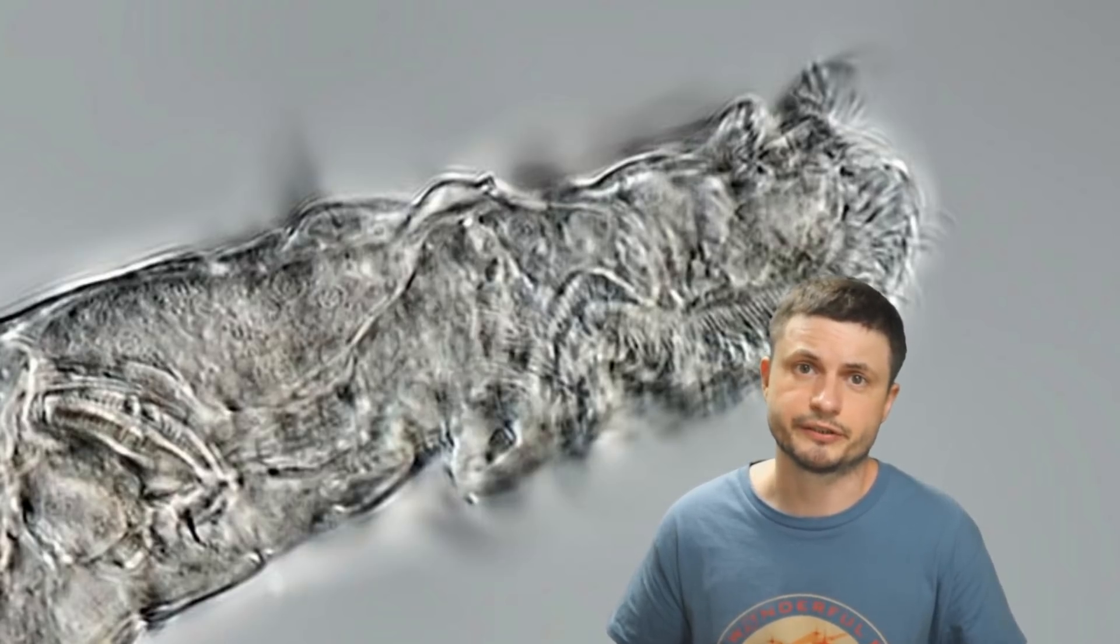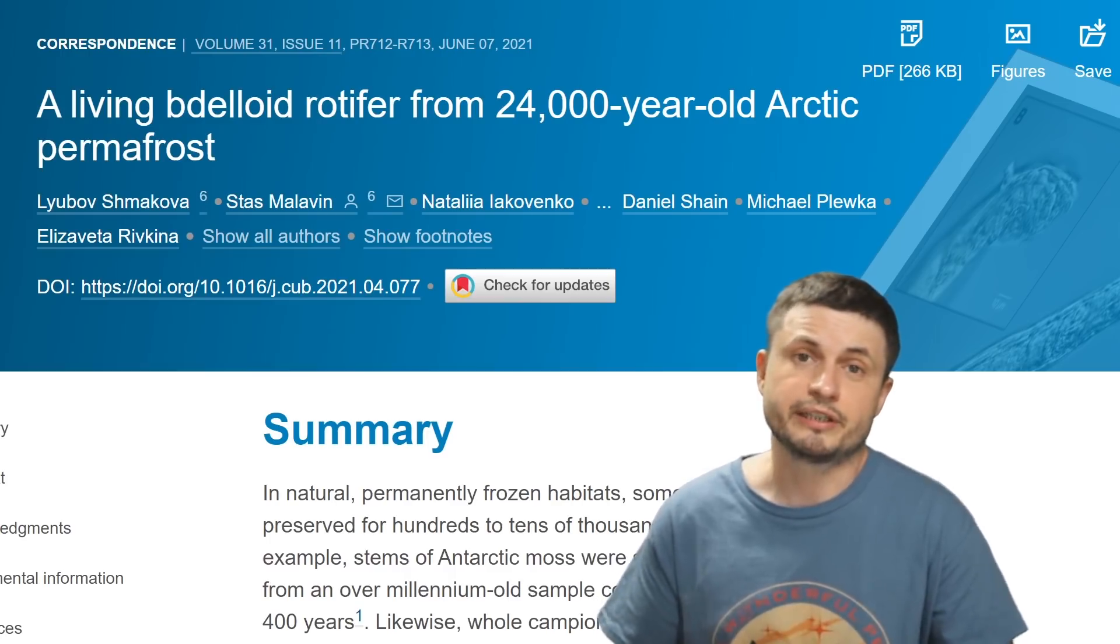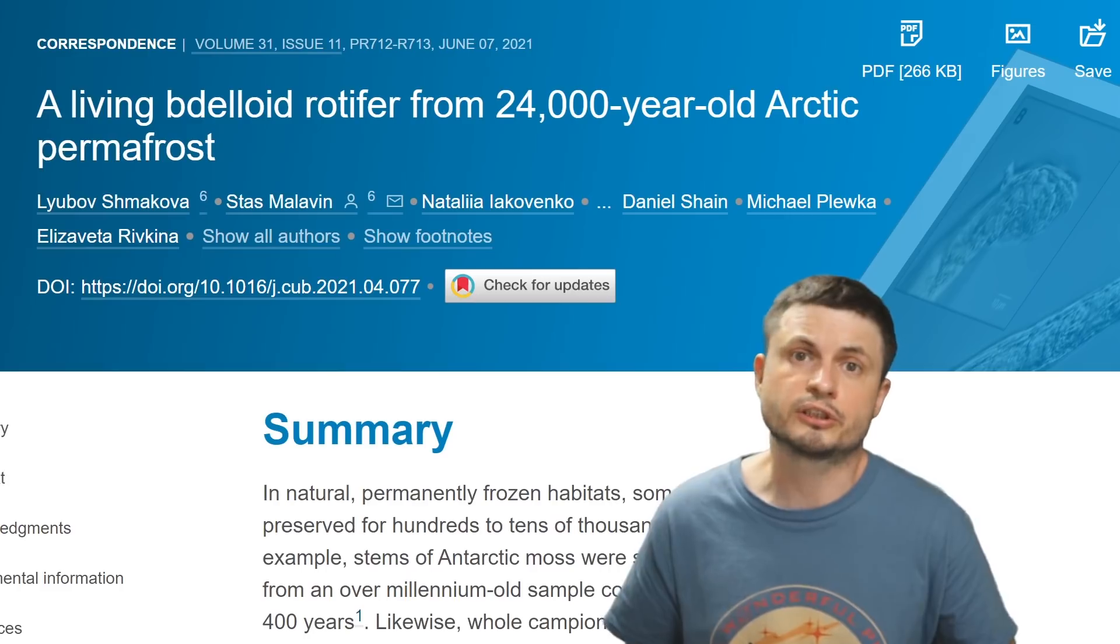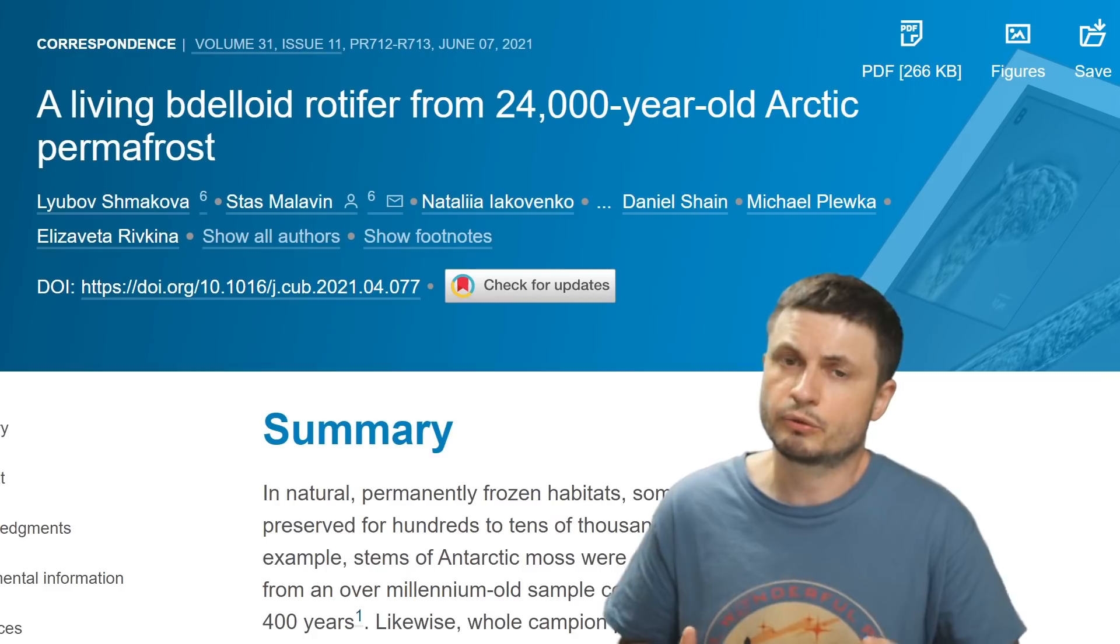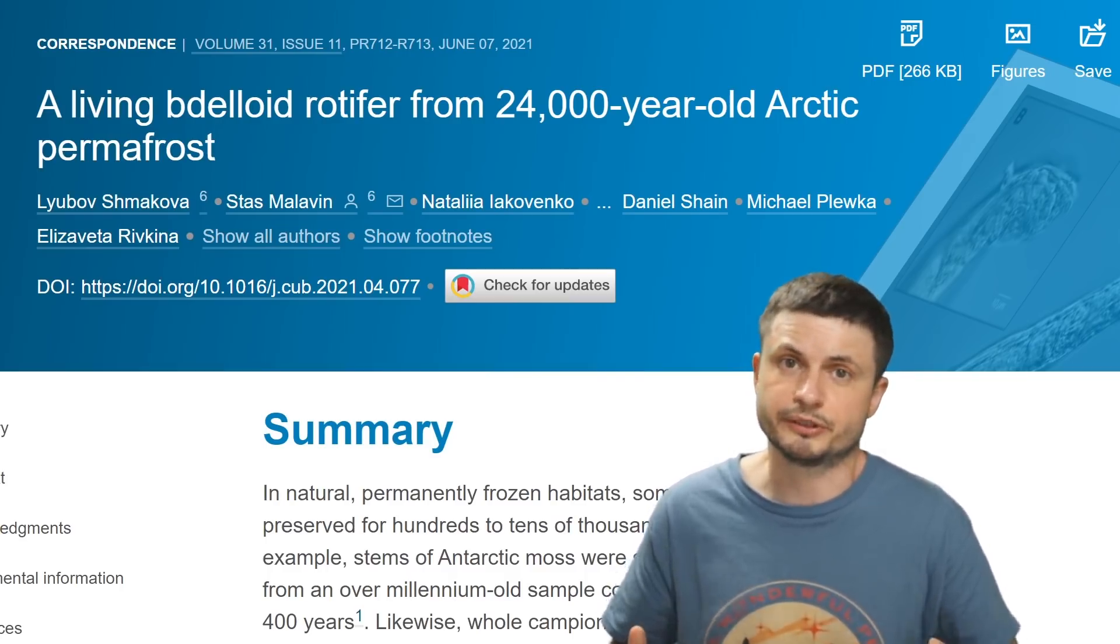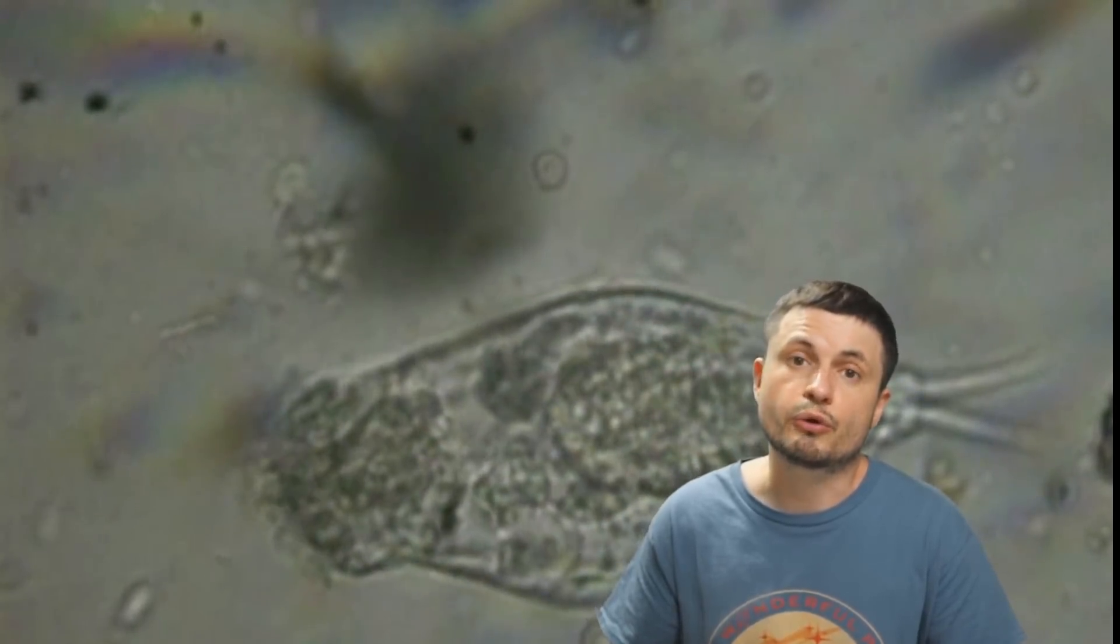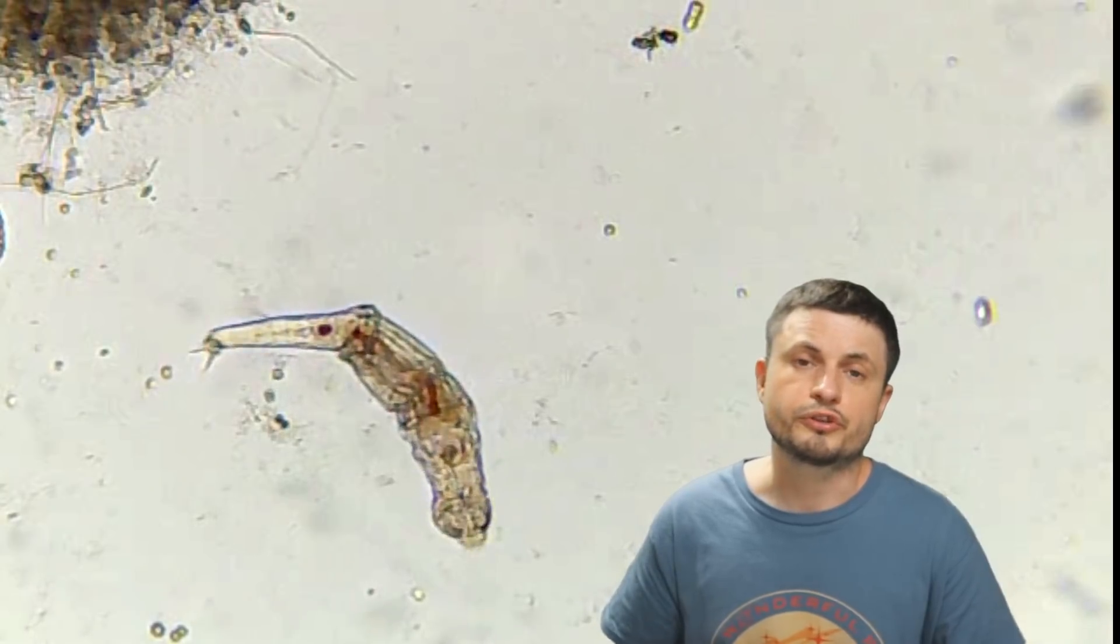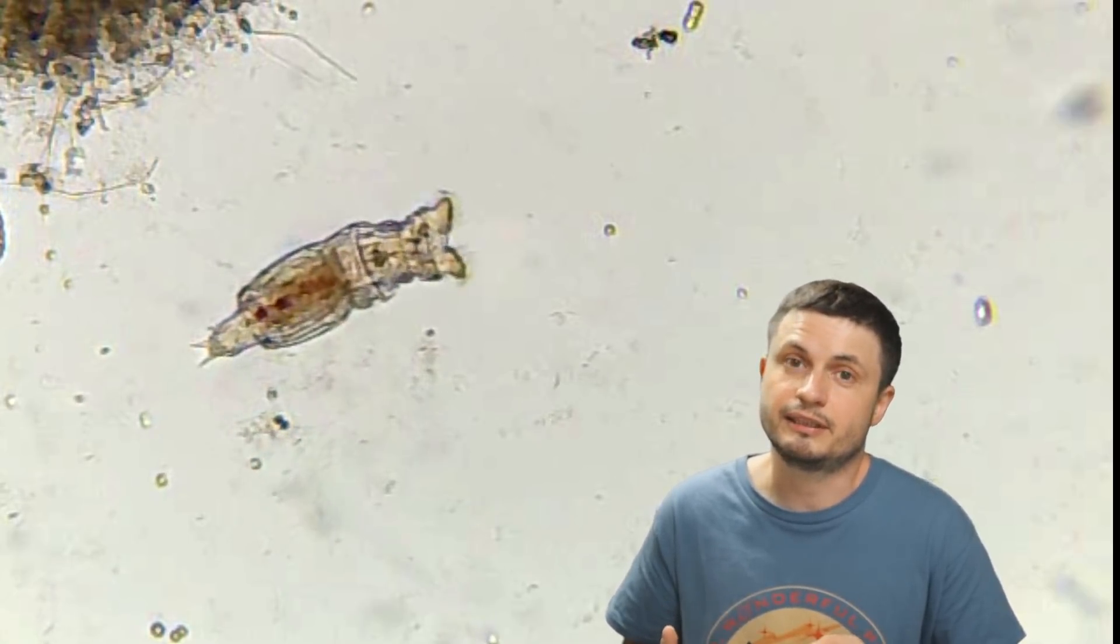This study provides direct evidence that a relatively complex multi-cellular organism that technically classifies as an animal with a nervous system and other organs can survive what's known as cryptobiosis—being frozen and lacking any kind of activity that's usually related to life such as metabolism. In this particular case, cryptobiosis lasted for 24,000 years, which makes these animals some of the most resilient species on the planet and definitely a species that's going to survive anything that happens to our planet.